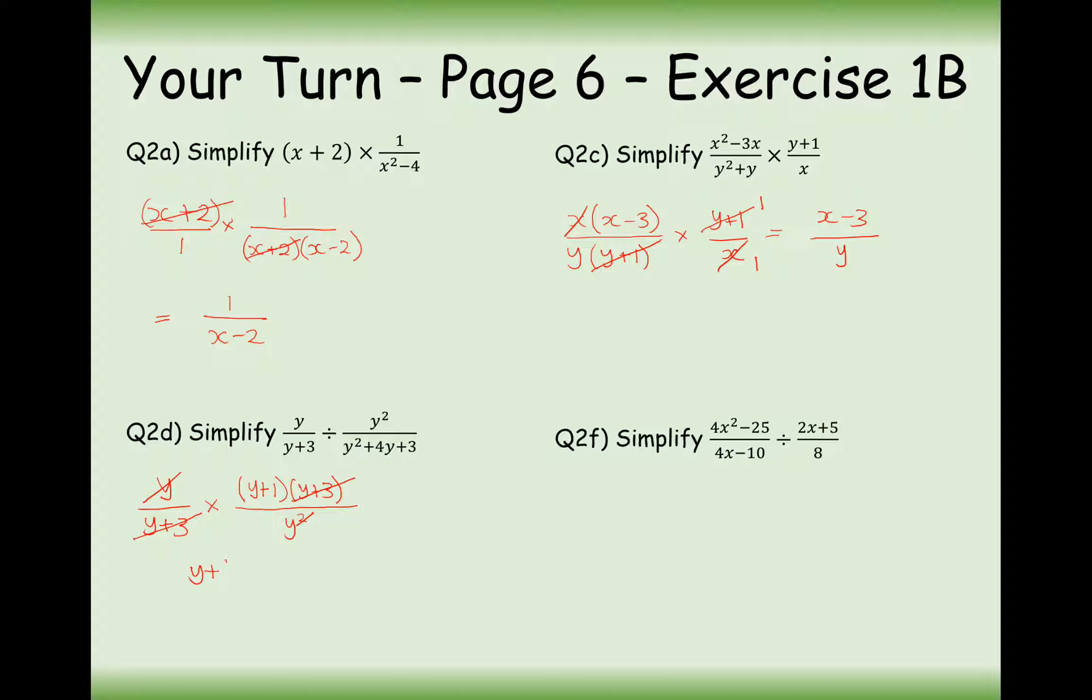So all we're left with here is y plus 1 over y. Now, this is as simple as it gets. You cannot cancel down a y from this expression here. If you think about it, if you've got something like 4 plus 1 over 4, so y is representing the number 4 here, and you cancel down 4's here, you've suddenly turned 5 over 4 as a fraction into a 1 over 0 fraction, which is impossible. So please never cancel out just terms that are being added together on the top or bottom. They always have to be a factor, a multiple, of the top or bottom.